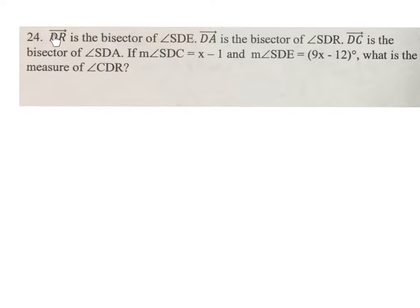We start off by learning that ray DR is a bisector of angle SDE. So we start off with a nice obtuse angle, because it's not a straight angle, so don't draw a straight angle SDE. And DR is the bisector of this angle, so R is out here.